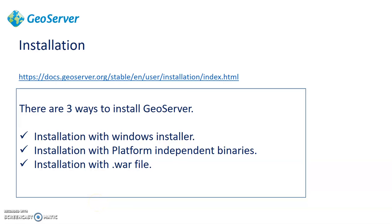Hi friends. In the earlier section we have seen how to install the Jio server with Windows installer and with platform independent binaries. In this section we are going to see how we can install the Jio server with the help of a .war file. A question must come in your mind: why do we need installation with a .war file? The answer is that if you already have a Tomcat server and you don't want to install or maintain a new server, and you want the Jio server to be installed in the existing server where your existing Java application is running, then .war file comes into play.